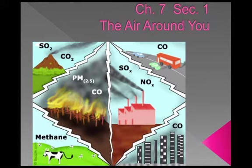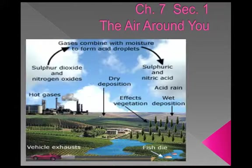Most air pollution is the result of burning fossil fuels such as coal, oil, gasoline, and diesel fuel. Almost half of this pollution comes from cars and other motor vehicles. Factories and power plants that burn coal and oil also release pollution. Burning fossil fuels produces a variety of pollutants, including carbon monoxide, nitrogen oxides, and sulfur oxides. The burning of fossil fuels can cause smog and acid rain.